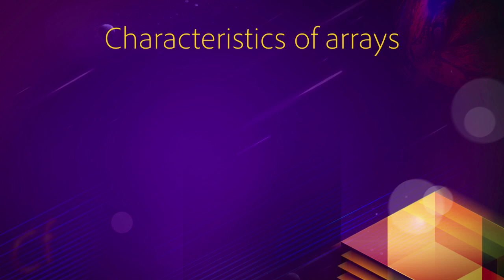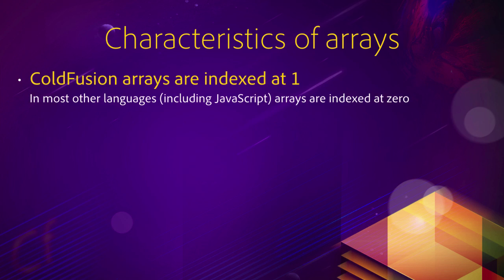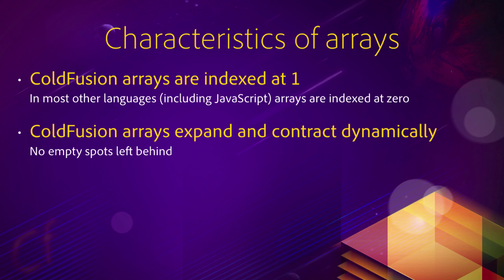ColdFusion arrays have some special characteristics compared to arrays in other languages. ColdFusion arrays are indexed at one, meaning the first element has index number one. This differs from most other languages — including JavaScript — where the first element has index zero. So if you are programming an Ajax application with ColdFusion on the server and JavaScript on the front end, that might lead to some confusion. Also, ColdFusion arrays expand and contract dynamically, so no empty spots are left behind when you remove an index.